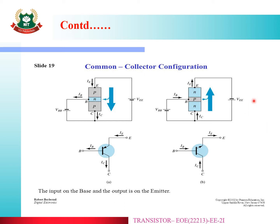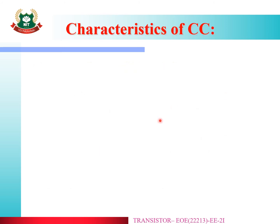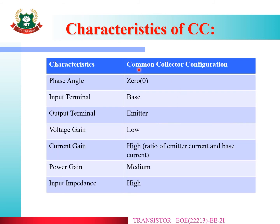These are the characteristics of the Common Collector configuration. The input terminal is the base and the output terminal is the emitter. The phase angle is zero degrees. Voltage gain is low — less than or equal to 1. Current gain is high, as it is the ratio of emitter current to base current. Power gain is medium, input impedance is high, and output impedance is low.